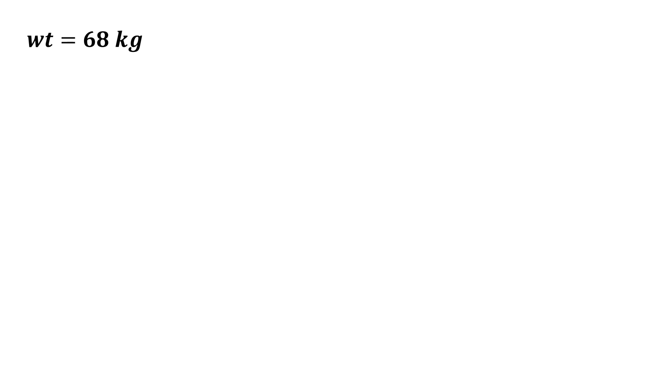Practice problem number two. Nurses this problem is for you. You have a patient weighing 68 kilograms that's in septic shock and needs a norepinephrine infusion. The initial dosing will be 0.01 micrograms per kilogram per minute and you're using double strength concentration which is 8 milligrams in 250 mLs.